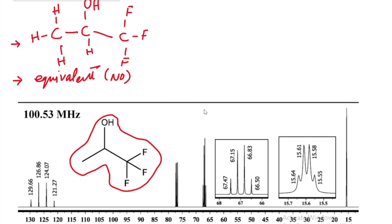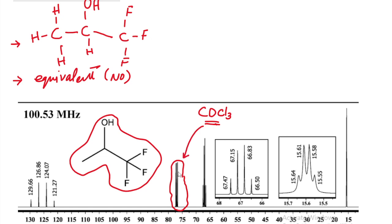We have already discussed CDCl3 as our deuterated solvent — deuterated chloroform. The peak of deuterated chloroform appears around 77 ppm. You can easily identify it in the carbon-13 NMR spectrum: when you see a peak around 77 ppm, you know it is the CDCl3 peak and not a peak from any carbon in your compound. Almost all three lines of CDCl3 have equal length.